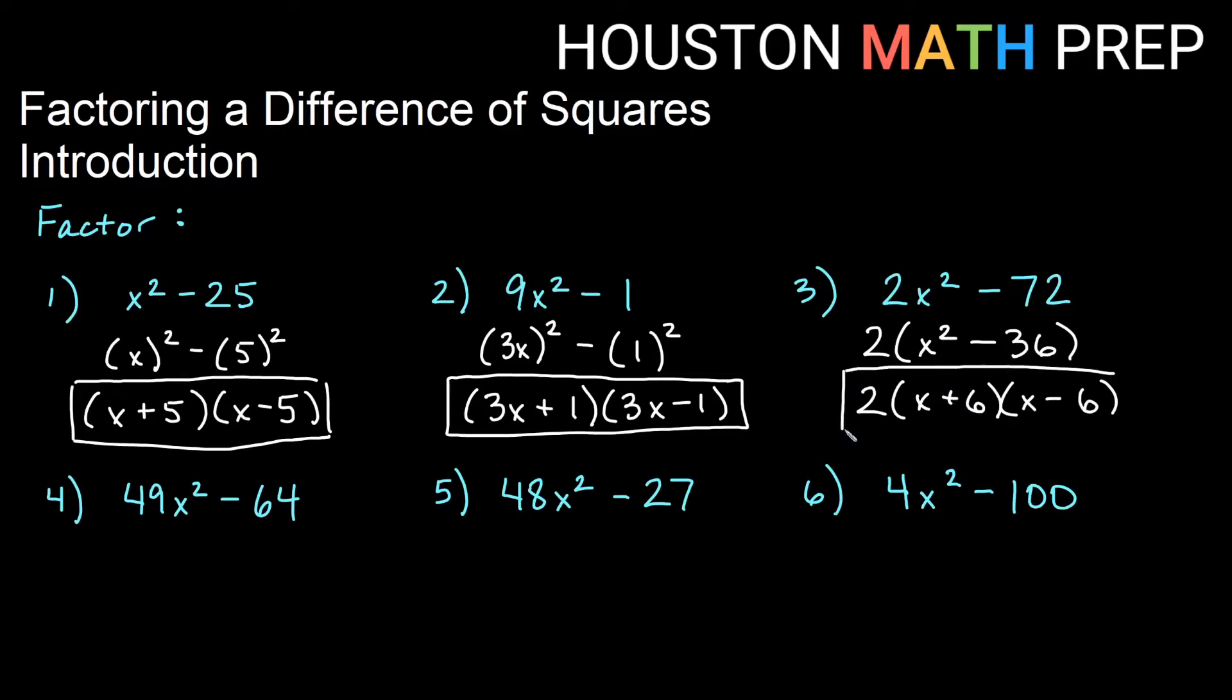It doesn't matter if we put the x plus 6 first, or the x minus 6 first, as long as we have all of these factors. The order does not matter. All right, let's look at this one. 49x² minus 64. These are perfect squares. This term here is going to be 7x times 7x. And this term here is 8 times 8. So those are the terms that go in my conjugate factors. I will get 7x in the front of each factor. I will get 8 in the back of each factor. One will be add, one will be subtract, and that is our factored solution there.